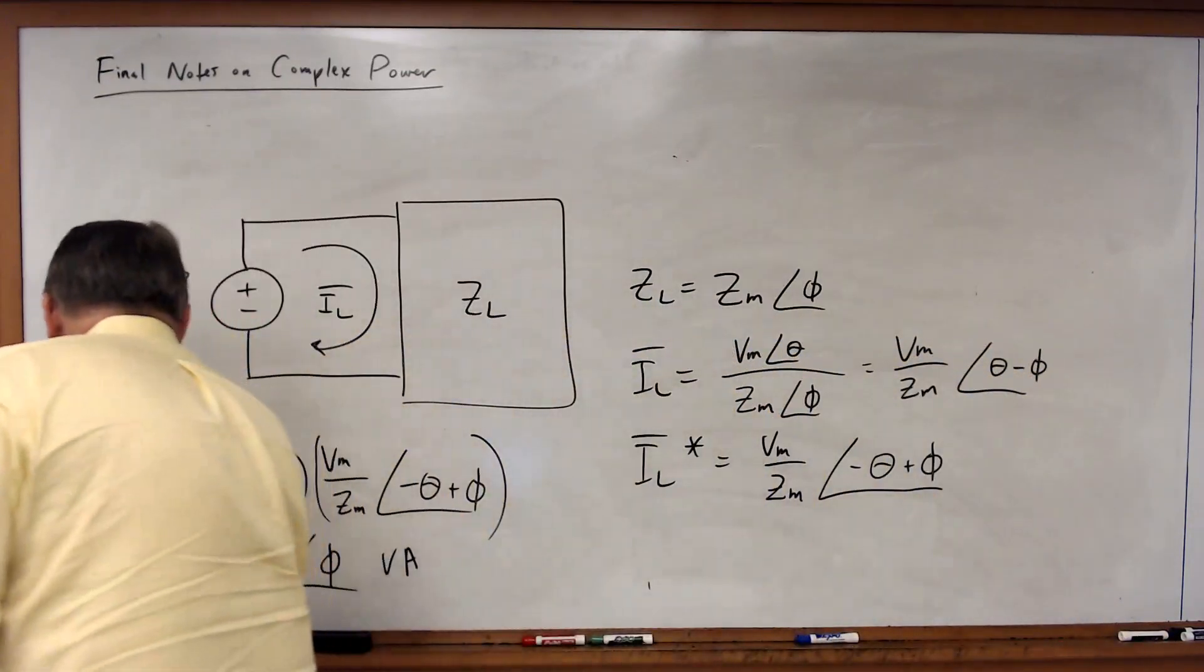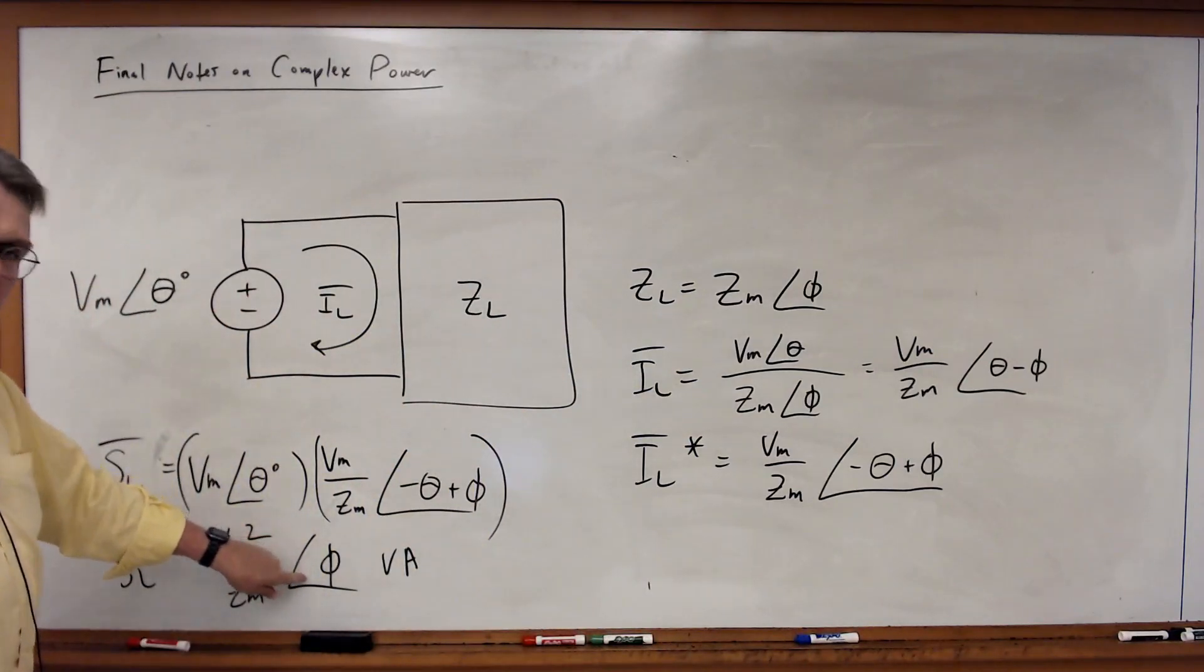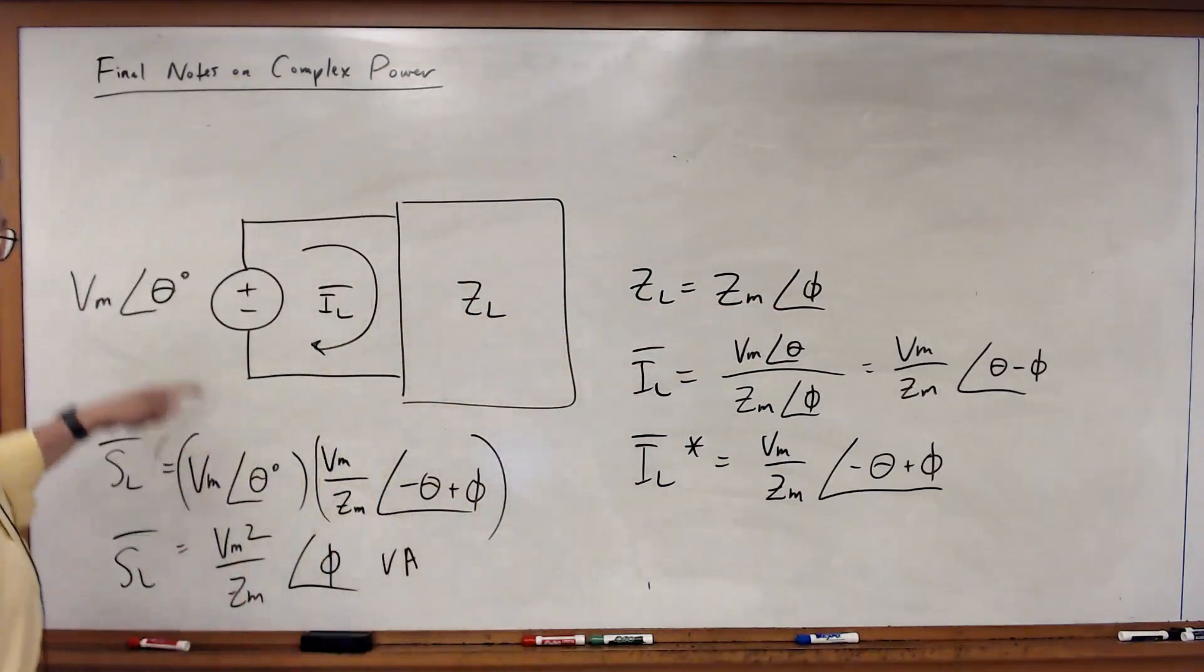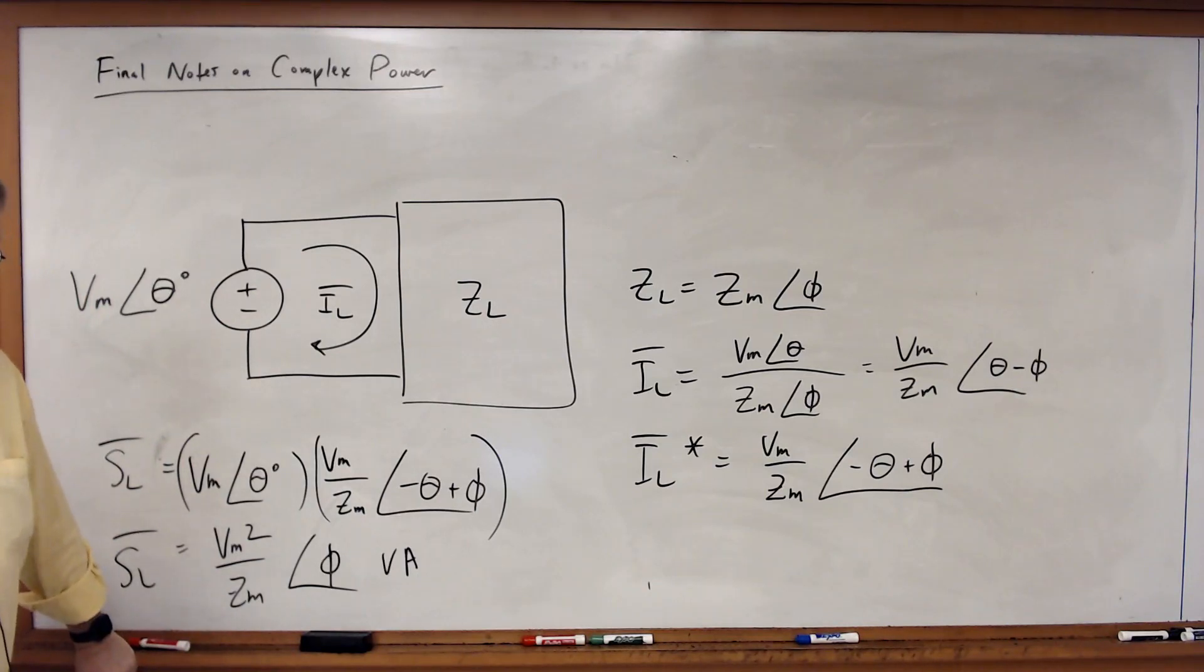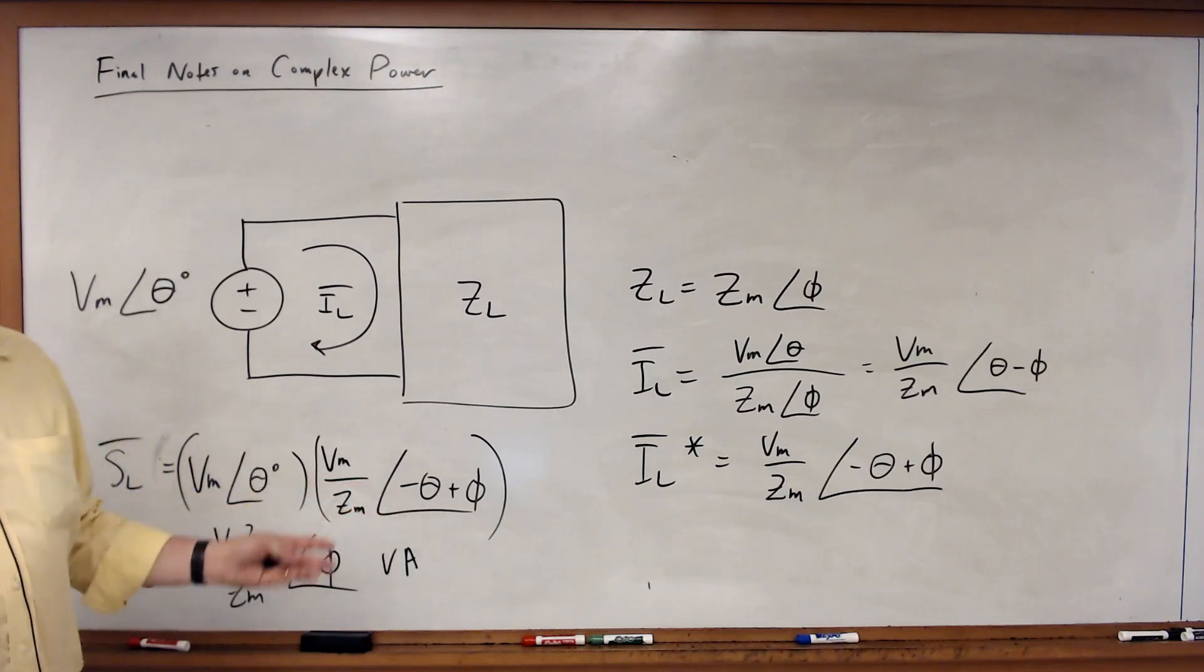Notice, the only phase angle that matters is the phase angle of the load. The theta disappears from our calculation. So as it turns out, if we have only one source driving a load, then the phase angle can be totally arbitrary. We'll still get the same value of complex power. So that's why we pick zero degrees. It could be any value, but zero just makes the math easier.